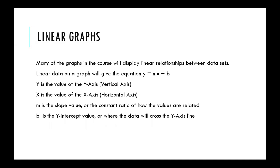A lot of the graphs in the course are going to be linear graphs — that is, they're going to give straight lines. A straight line has the equation form of y equals mx plus b, where y is the value along the y-axis, that vertical axis up and down, and x is the value of the data point along the horizontal axis, left to right.